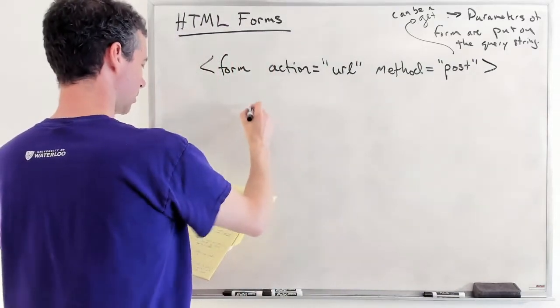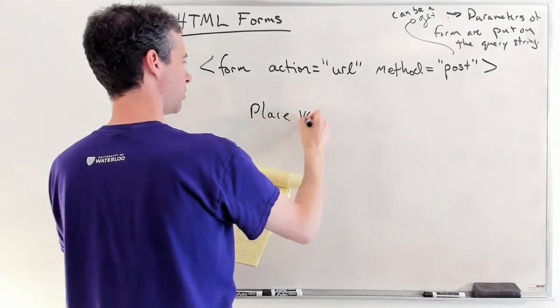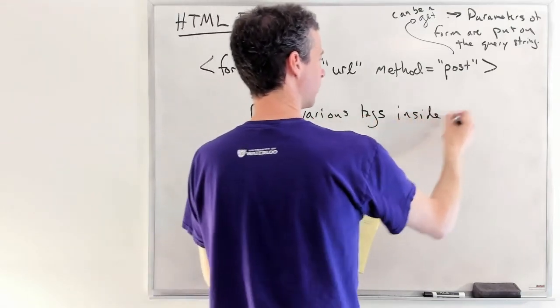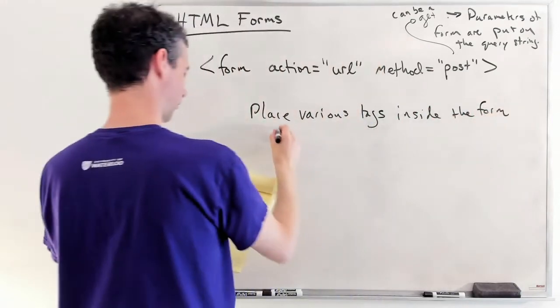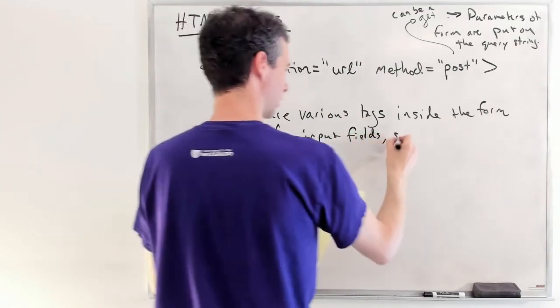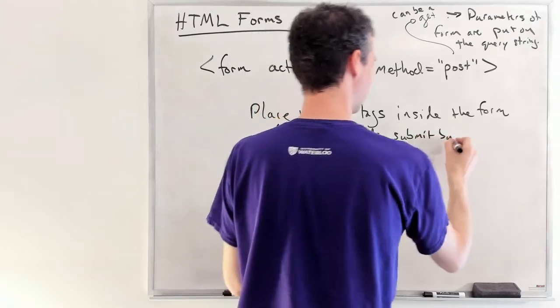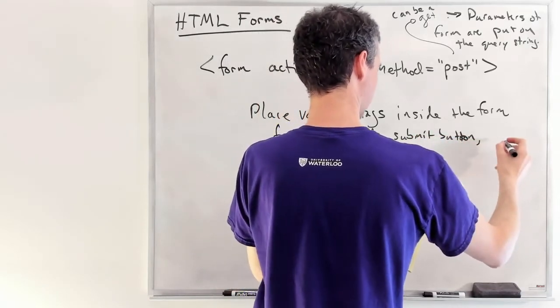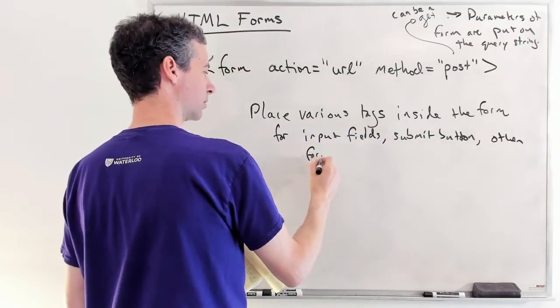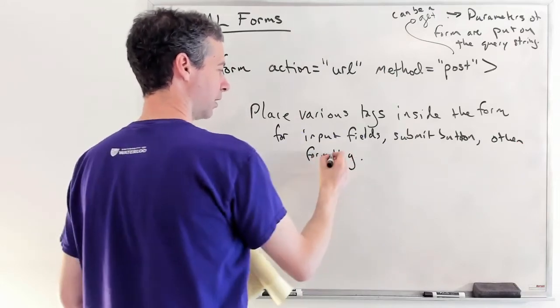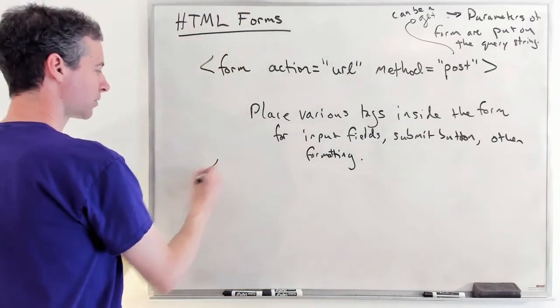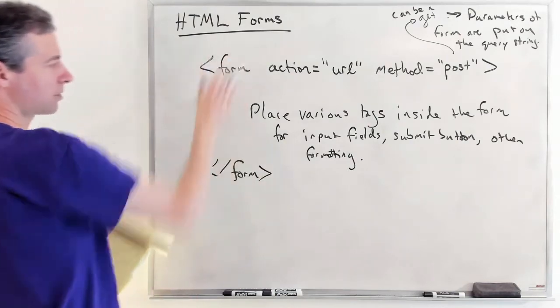So, it can be a GET. And if you do this, then the parameters of the form are put on the query string. So, you would be doing, you would end up, if you make this a GET request, you would get this URL, and any of the data that's in the form would be appended to that URL as a query string, which is a handy little thing to know. Now, inside of here, you're going to, this is just a comment. This is not HTML.